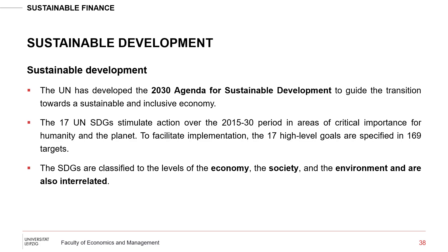The United Nations developed the 2030 Agenda for Sustainable Development to guide the transition towards a more sustainable and inclusive economy. The 17 SDGs stimulate action between 2015 and 2030 in areas of critical importance for humanity and the planet. To facilitate implementation, these high-level goals are specified in 169 lower-level targets, which lay out the goals in more detail. They are classified at the level of the economy, society, and environment — and are all interrelated.